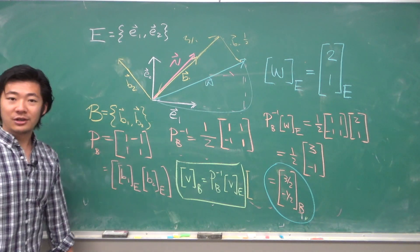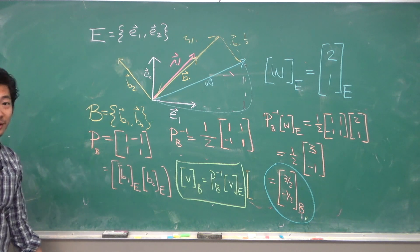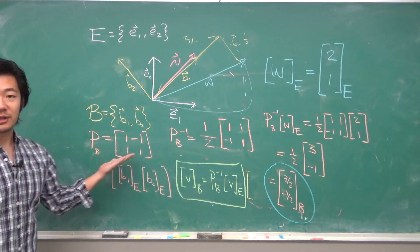And so, this is how you use a change of coordinate matrix. Sometimes, vectors look nicer in a certain coordinate. And so, the calculations will be better and that's why you would ever use such a thing.